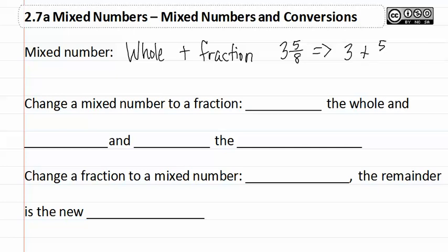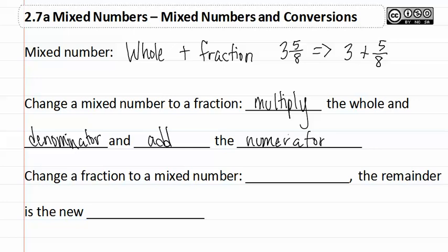To change a mixed number to a fraction, we need to multiply the whole number and the denominator and then add the numerator to that. Then to change a fraction to a mixed number, we merely divide. The remainder is going to be our new numerator.